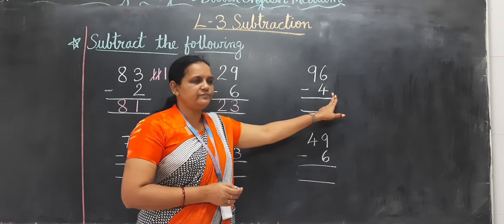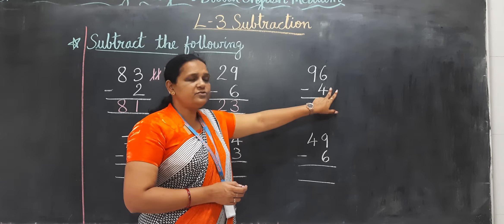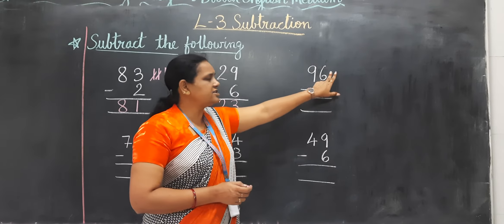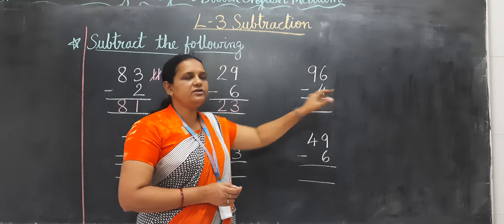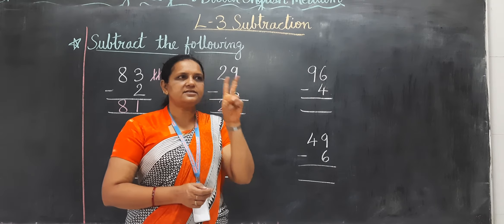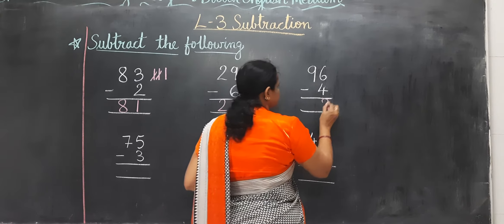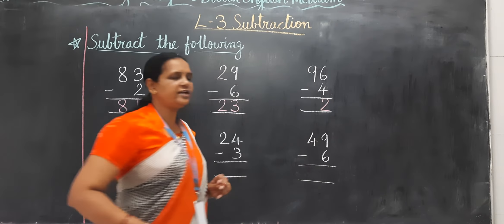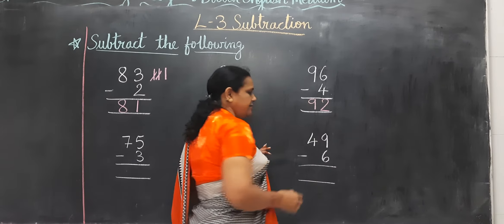Now, 6 minus 4. After 4 which number is here? Till 6 you have to count. After 4? 5, 6. Now how many fingers? 2. Any number is below 9? No. So you have to put direct 9.